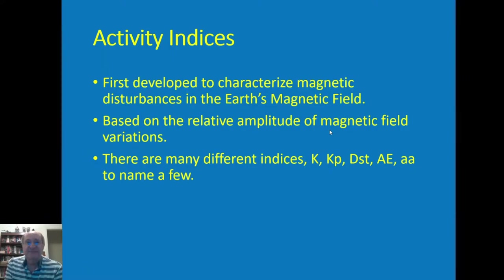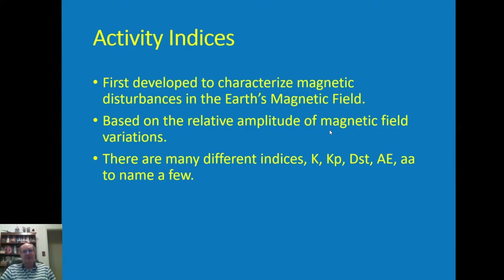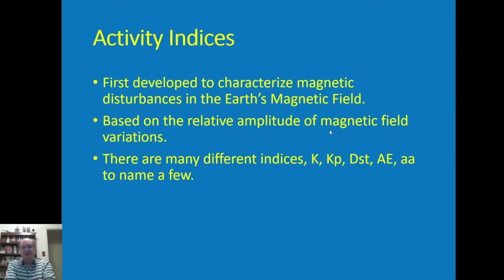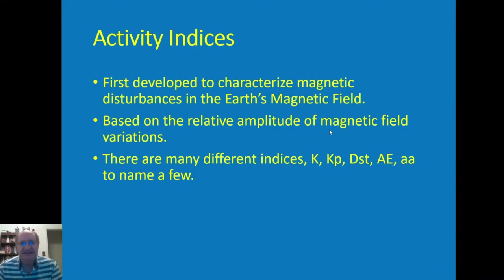The last thing I'm getting to are activity indices. They were first developed probably almost 100 years ago to characterize magnetic disturbances in the Earth's magnetic field; they are primarily based on the relative amplitude of magnetic field variations. There are a whole lot of them — some have lasted a long time, others have popped up for five or ten years and gone away. The main ones are: the K indices, Kp, Dst which measures the storm-time equatorial electrojet current, AE for the auroral electrojet, and AA which is a very old index some people keep using.